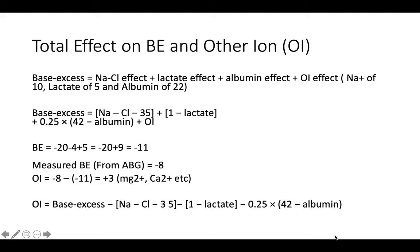In a worked example with a sodium difference effect of minus 10, lactate effect of minus 5, and albumin level of 22 g/L: base excess calculates as minus 20 minus 4 plus 5, which equals minus 11. If the measured base excess from blood gas is minus 8, the difference is plus 3, suggesting the presence of other ions, possibly from magnesium or calcium levels.